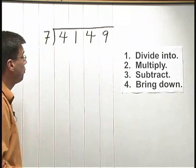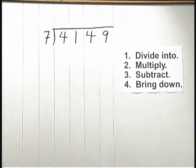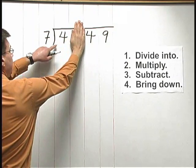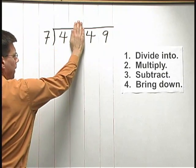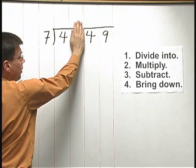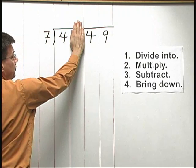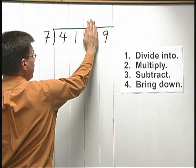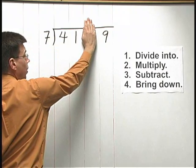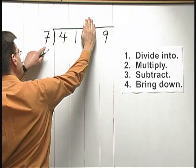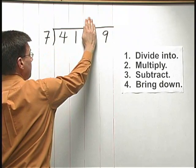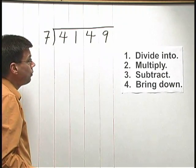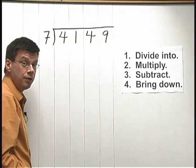Let's go ahead and start this problem. To get started, we need to think about how many times the number in front — the 7 — goes into just the first digit inside, the 4. Well, 7 doesn't go into 4 even one time. Because 7 doesn't go into 4 even once, we need to look at the first two digits. We think of the 4 and the 1 as 41. How many times does 7 go into 41? 7 times 5 is 35. 7 times 6 is 42. 42 is too big, so we're going to use 5.